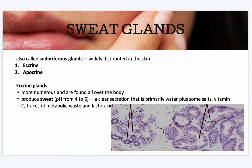Next are your sweat glands, also called sudoriferous glands, which are widely distributed in the skin. Your eccrine glands are more numerous and found all over the body — these produce sweat with a pH from 4 to 6. It's a clear secretion that is primarily water plus some salts, vitamin C, traces of metabolic waste, and lactic acid.